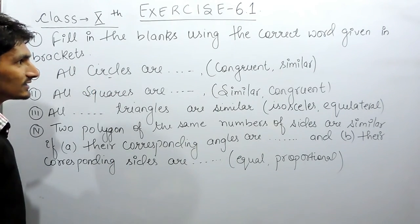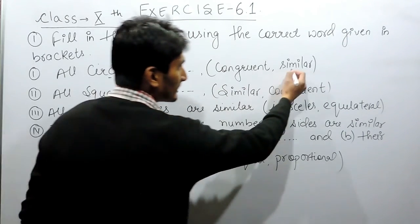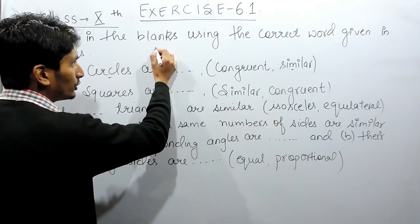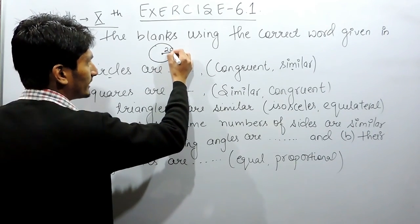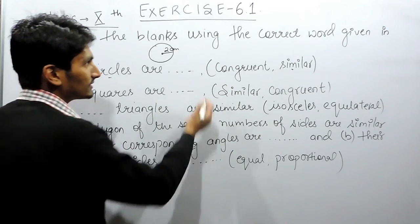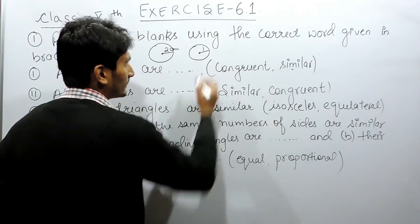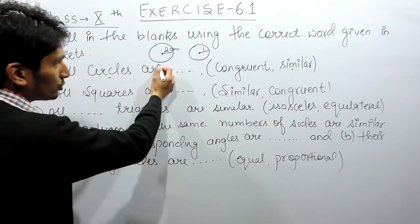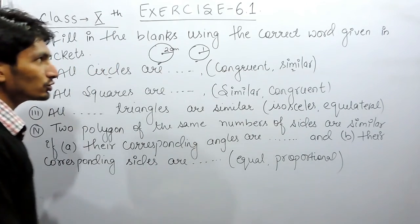So let's check: all circles — are they congruent or similar? Clearly, all circles will be similar; they can't be congruent. If I make a circle with radius 2 centimeters it looks like this, but if I make a circle with radius 1 it looks like this. These two are not an exact copy of each other, but they are similar — the shape is the same but the size is different.